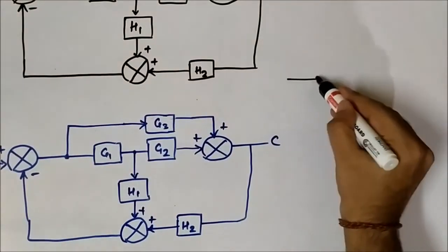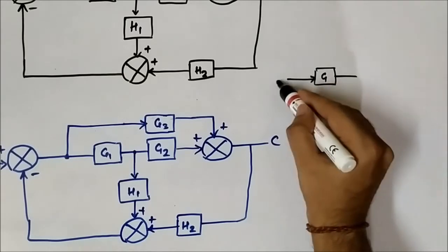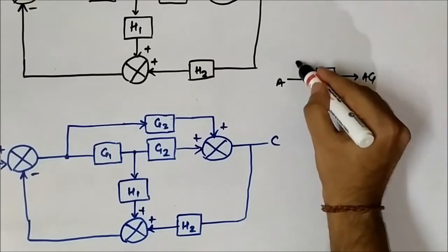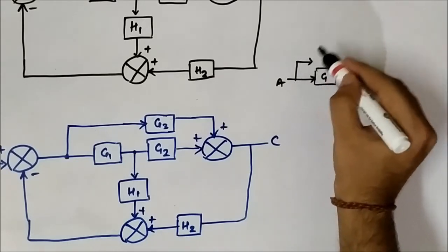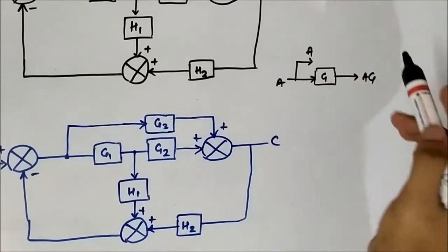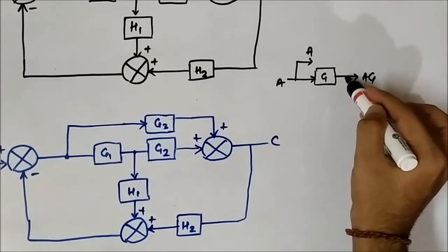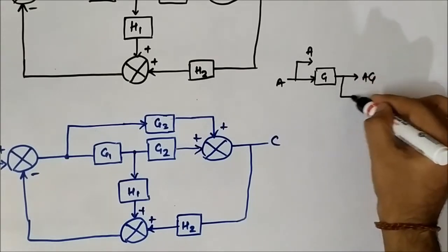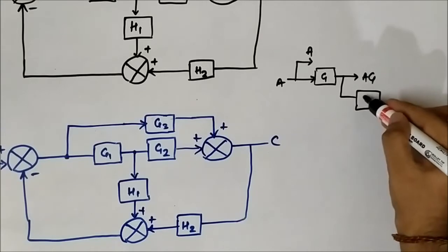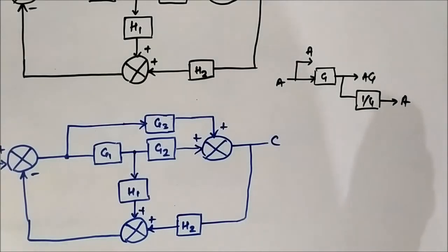Here is the block — let us say it is G. This is the input A, this is the output AG, and the gain of the block is G. So this is the takeoff point and it has the value A. The rule says that when we shift a takeoff point either behind or ahead of a block, the value of the signal should stay the same. When we are taking this here, it means the value should stay as A, but here it is AG. So if we add a 1/G block — the reciprocal of this gain — we will get the value as A.